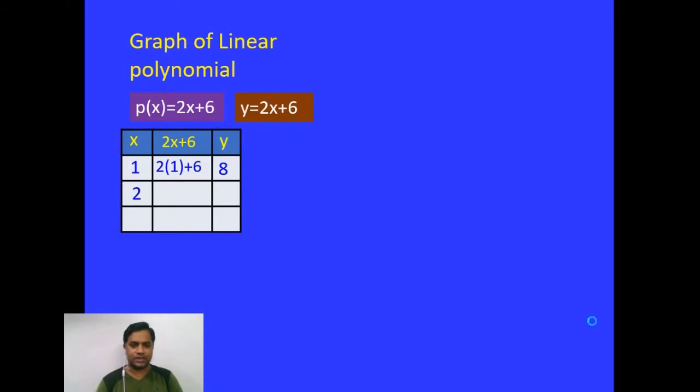Now let us substitute x = 2. 2 × 2 + 6, result is equal to 10. Now substitute x = -1. Now what will be the answer? 2 × -1 + 6, that gives us 4.